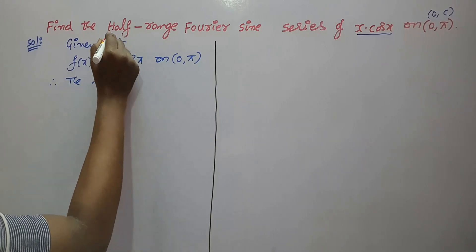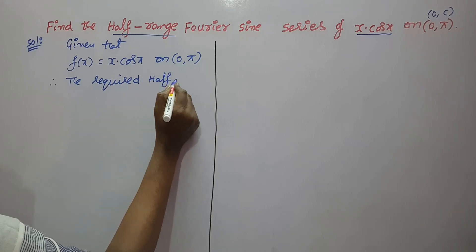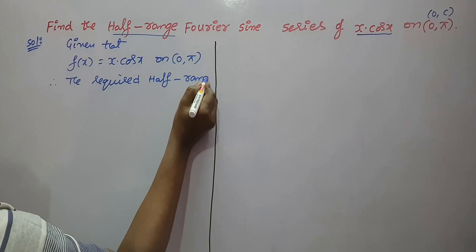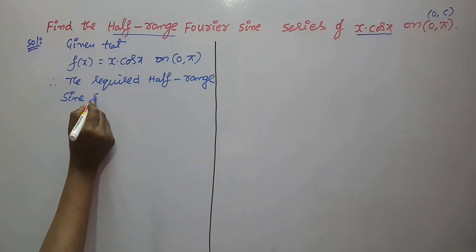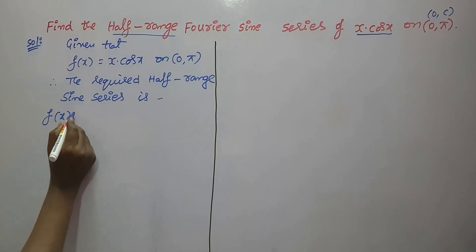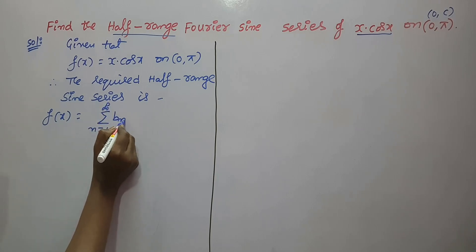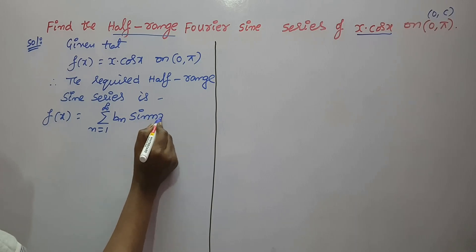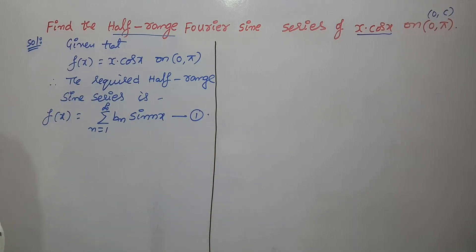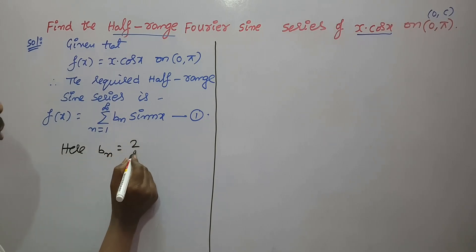Write the formula for the half-range sine series. The required half-range sine series is f(x) = summation from n=1 to infinity of b_n · sin(nx), which we call equation number one. It is enough to find out the value of b_n only. The formula for b_n is: b_n = (2/π)...